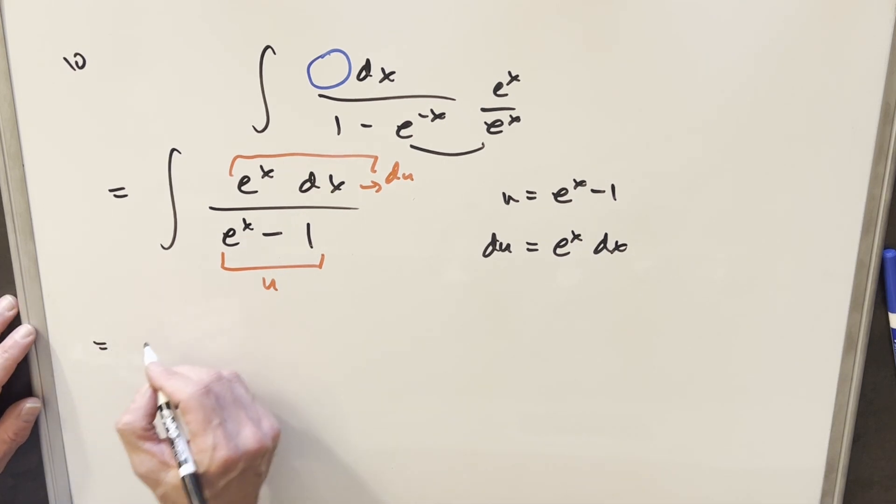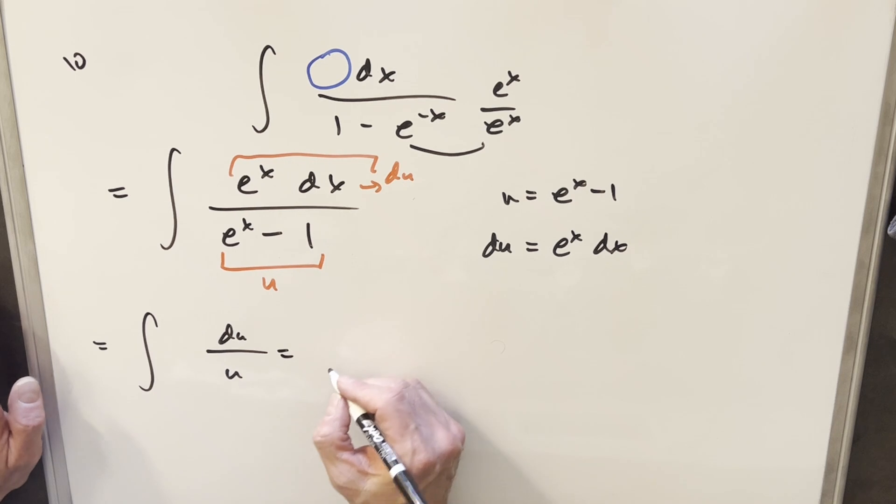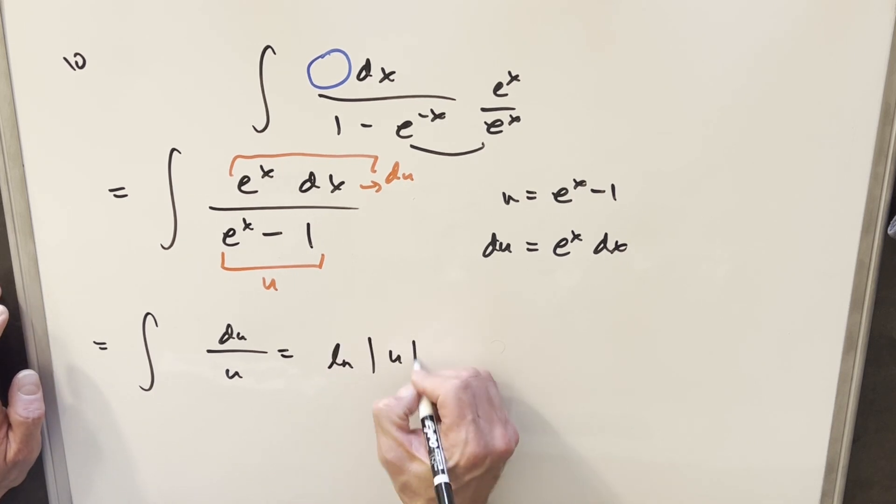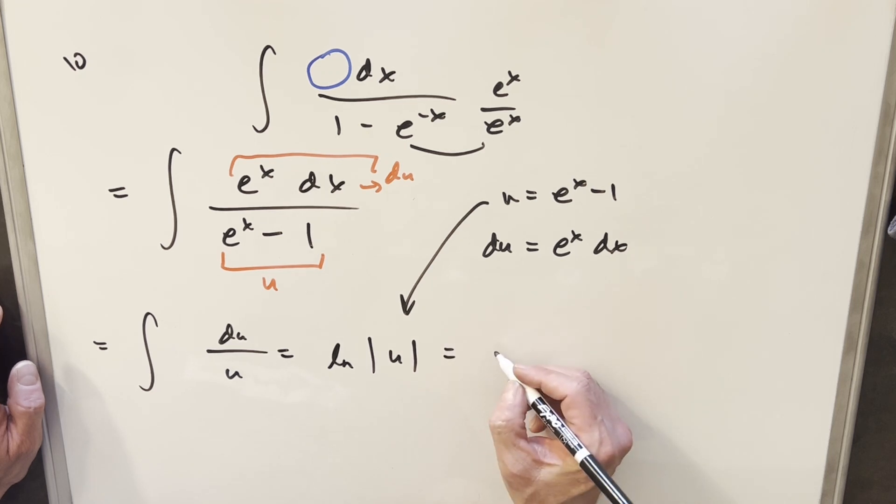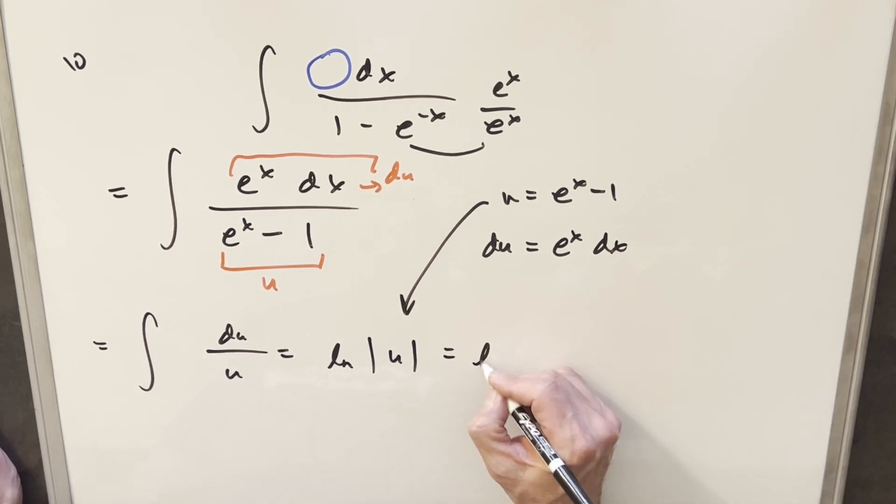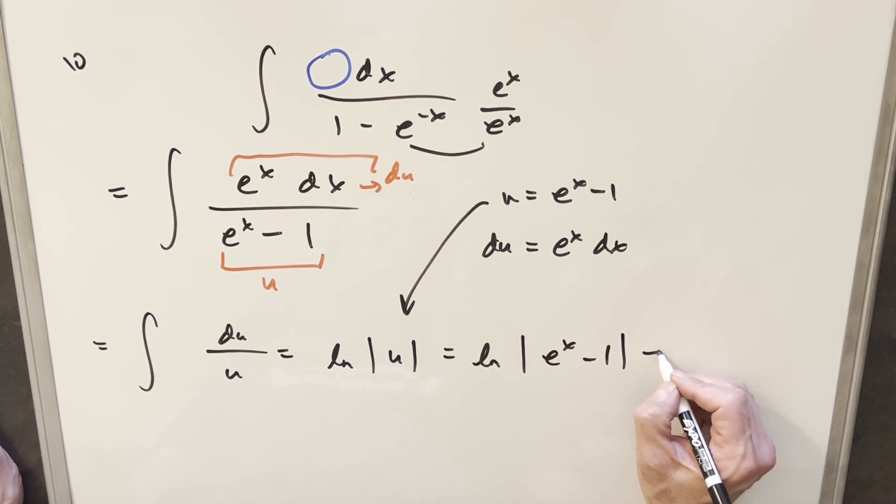So I'll make the substitution now. We end up with just du over u. Well, it's just going to be natural log absolute value of u. But then we can just back substitute to finish this off. So for the final solution, we're just going to have natural log absolute value e to the x minus 1 plus c.